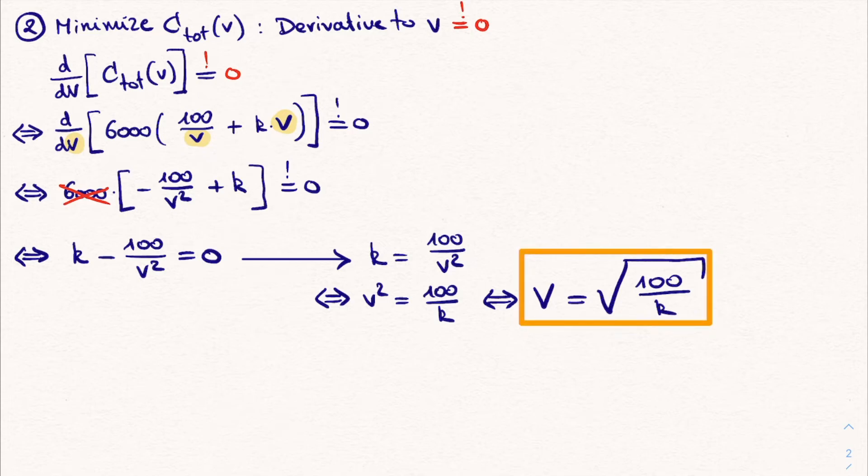Therefore, if we know the exact value for K, which determines the fuel cost of our travel and is dependent on the type of ship and the weight of the cargo, then we can exactly calculate the velocity for which our total cost function to bring the cargo from A to B to be minimal. Now at this point, you have your solution and the problem is solved.